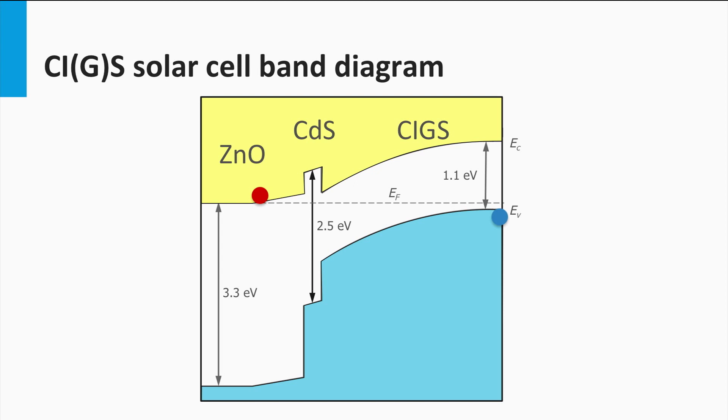The holes diffuse to the molybdenum back contact to be collected. Here the holes recombine with the electrons supplied from this molybdenum back contact.